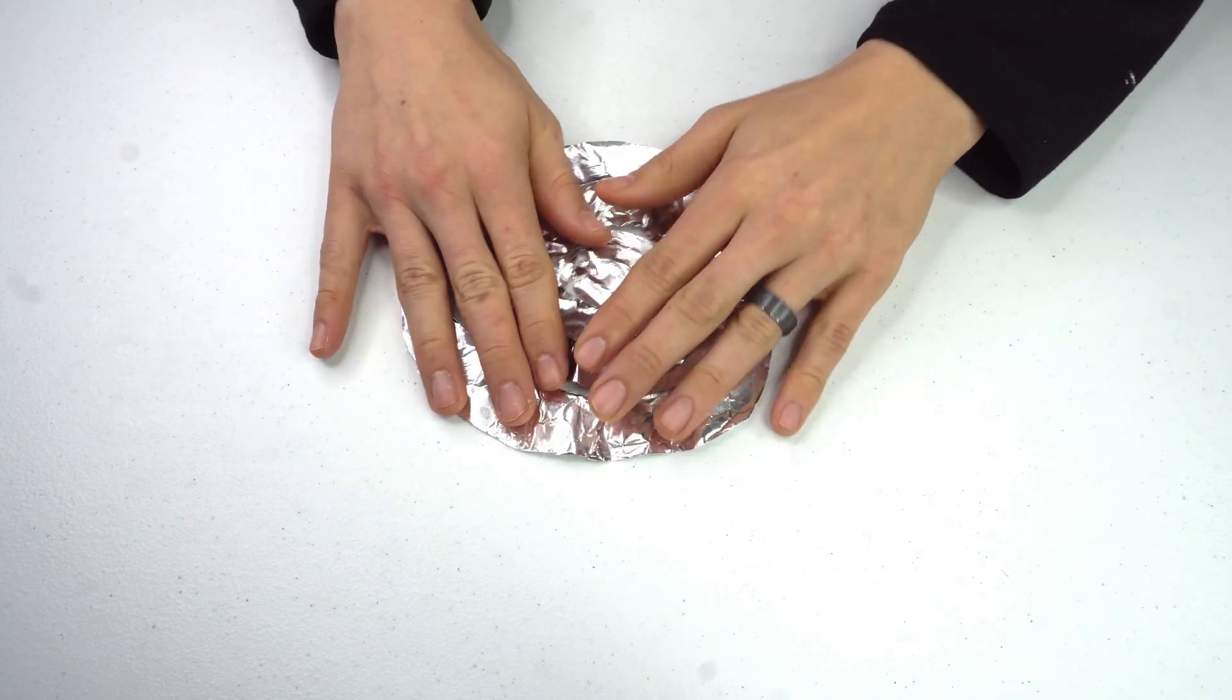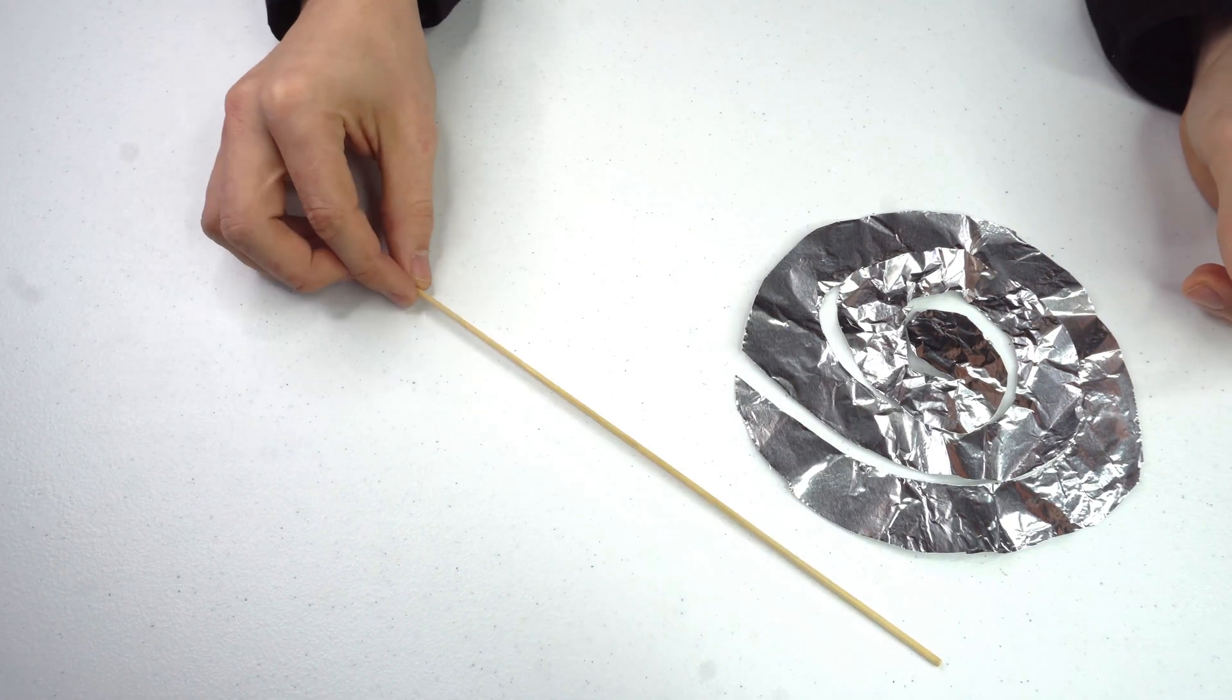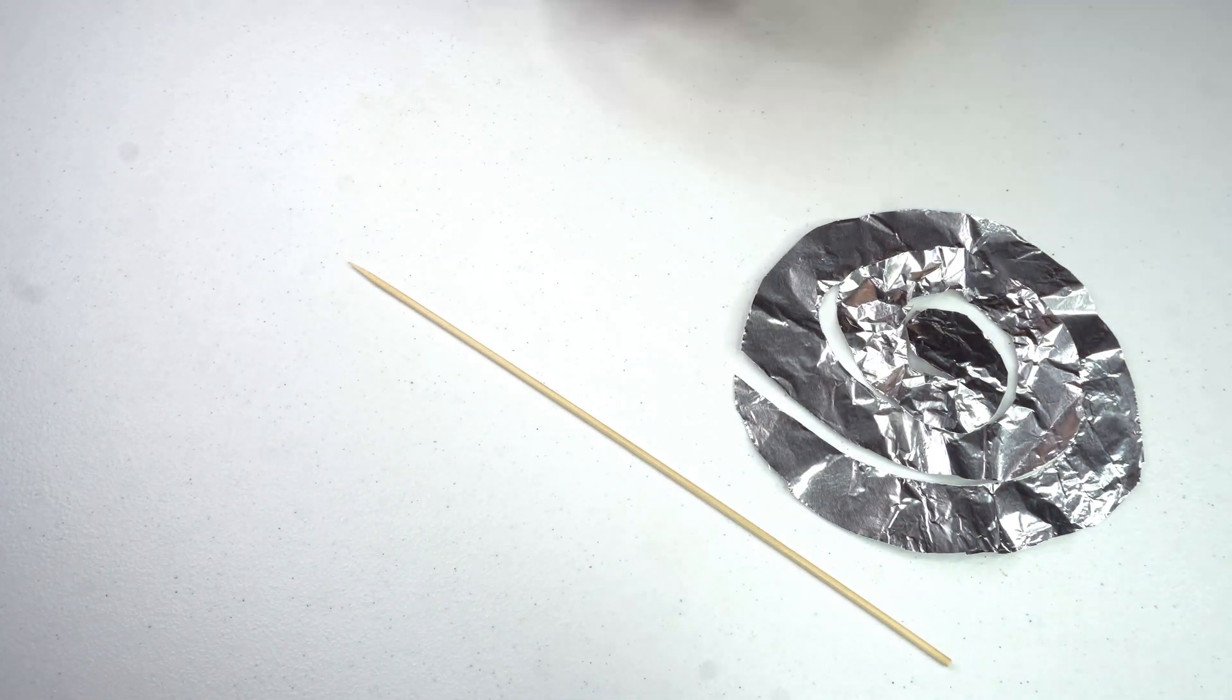Now that our aluminum spiral is ready, next you'll need a shish kebab skewer like that, and some kind of putty. I'm going to be using Play-Doh in my example.